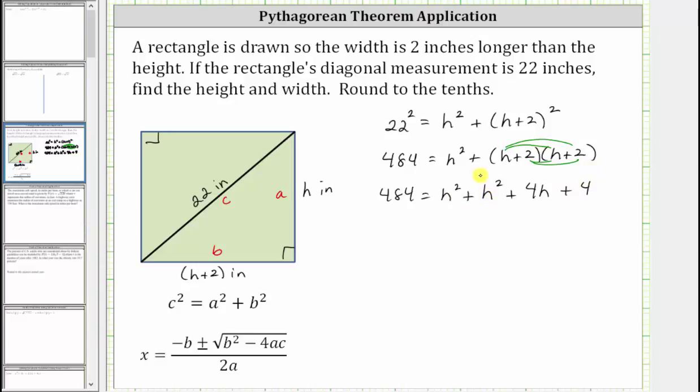On the right side, we have two like terms. h squared plus h squared is equal to two h squared, giving us 484 equals two h squared, plus four h, plus four.